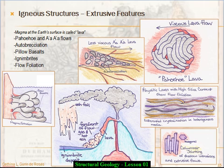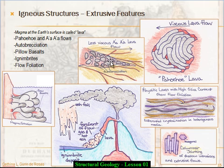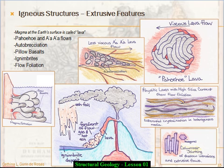Now let's quickly talk about some extrusive features. We have pahoehoe and aa flows. Pahoehoe is your ropey, thick, viscous, slow-flowing lava that just gets all stacked up. Aa flows are a lot less viscous — they flow much quicker, can create narrow channels, and undergo auto-brecciation, where some of the magma freezes as it flows along and those breccia pieces get rolled back into the magma. It all becomes kind of messy, but understanding what's happening as it freezes helps you interpret what you see later.